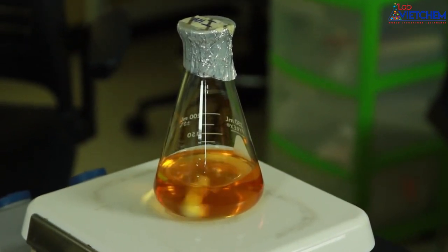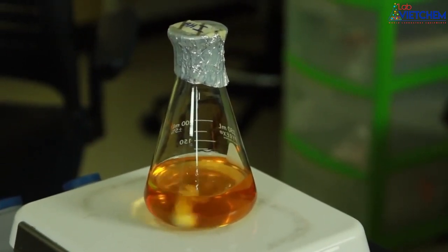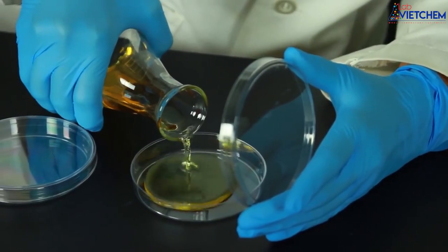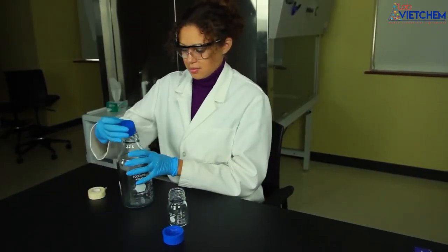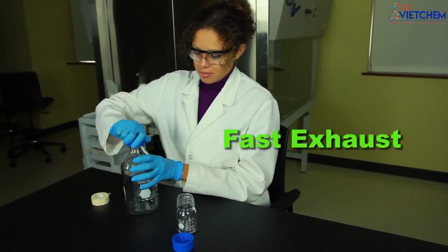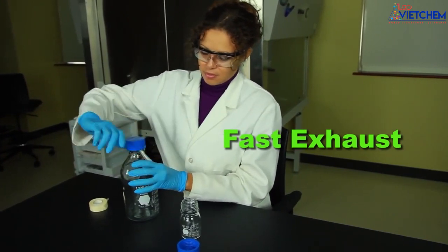Once the culture media has cooled to about 45 degrees celsius, it's ready to be poured into petri dishes. Now let's run a second autoclave cycle, this time using the fast exhaust to sterilize some empty bottles.